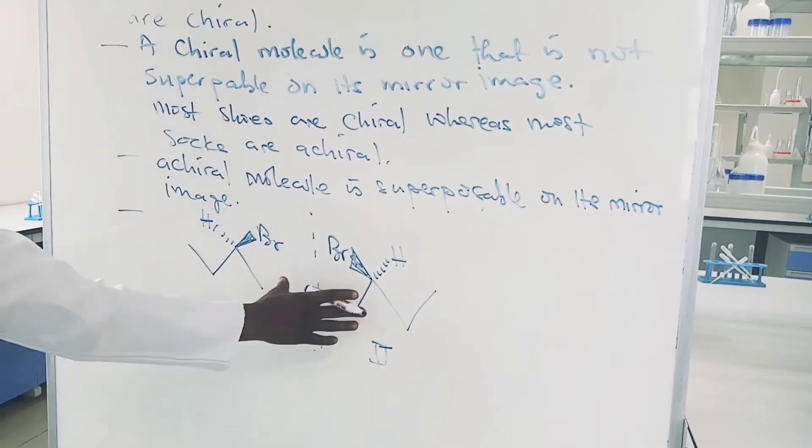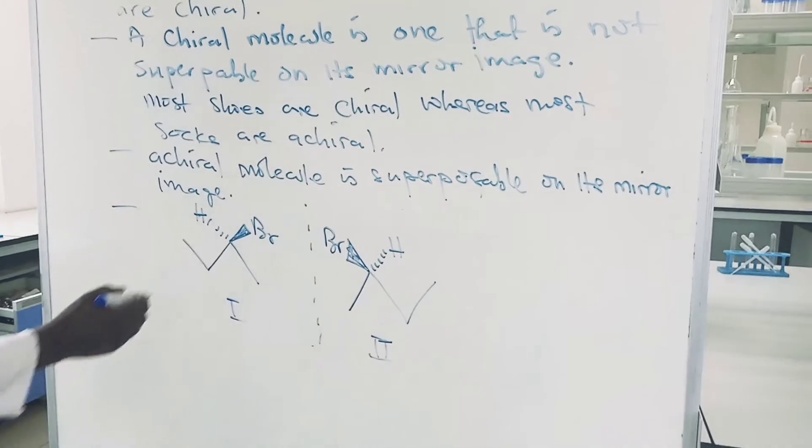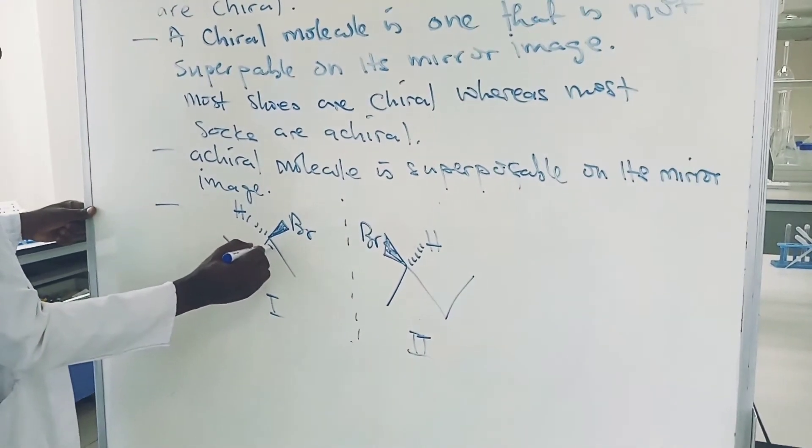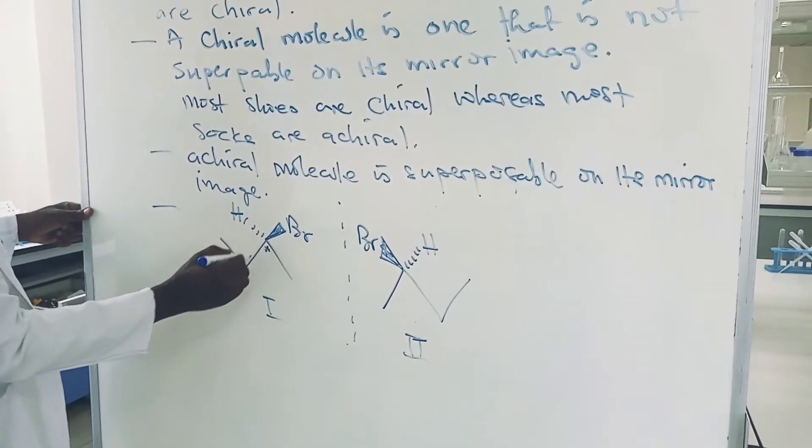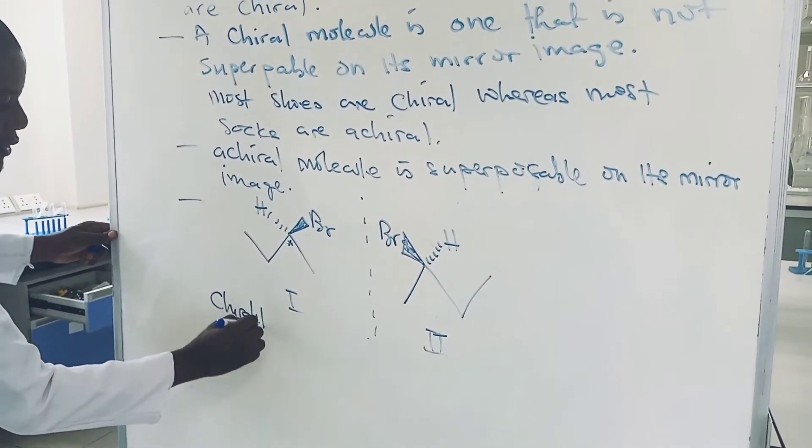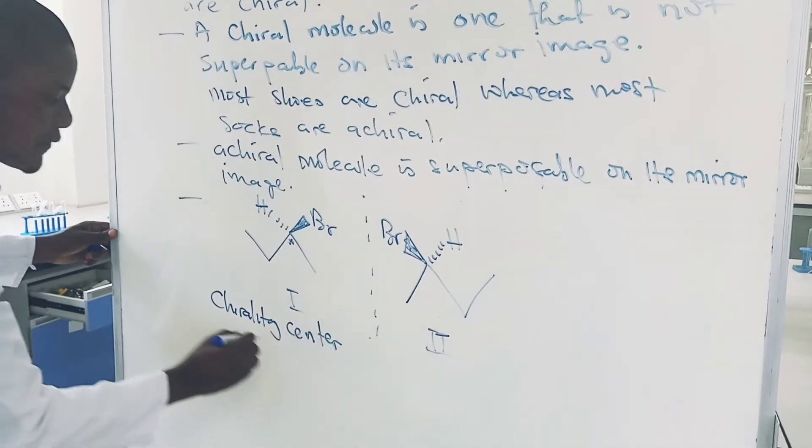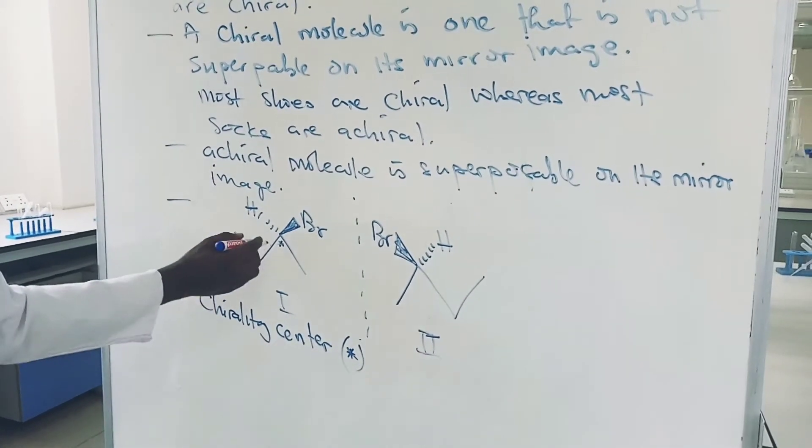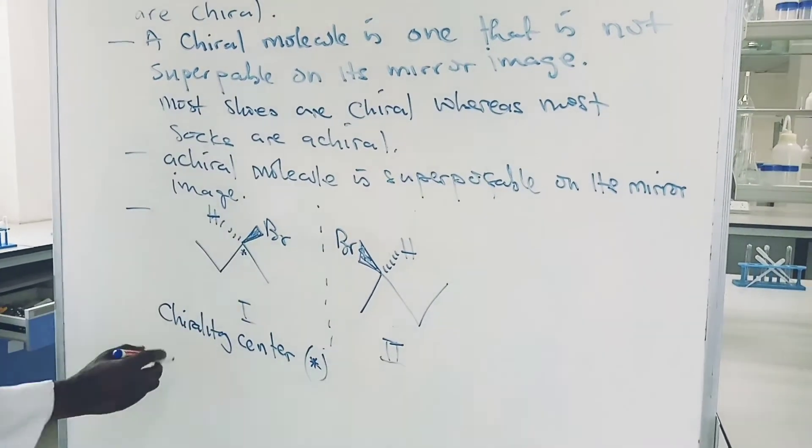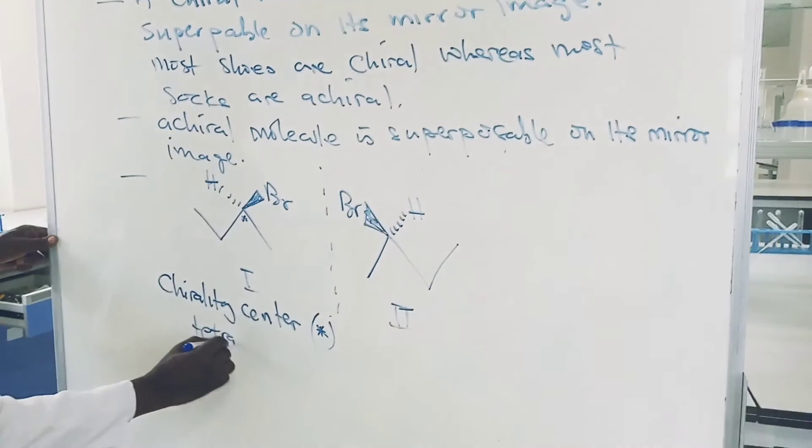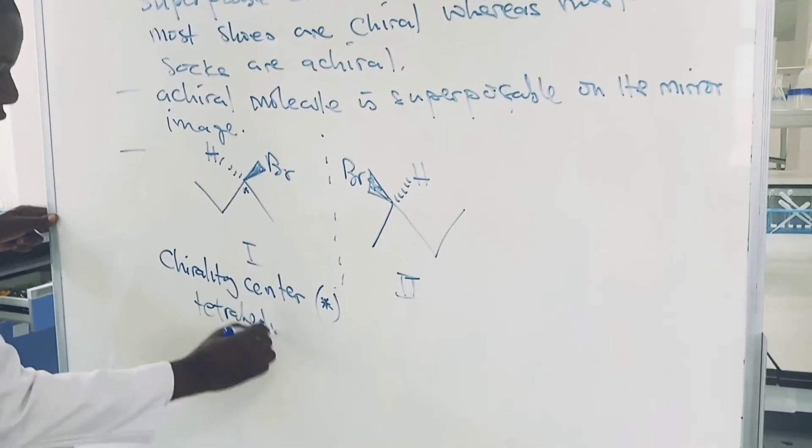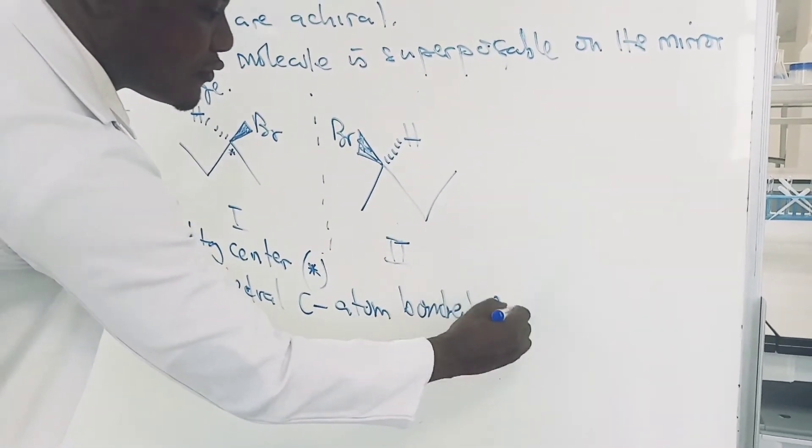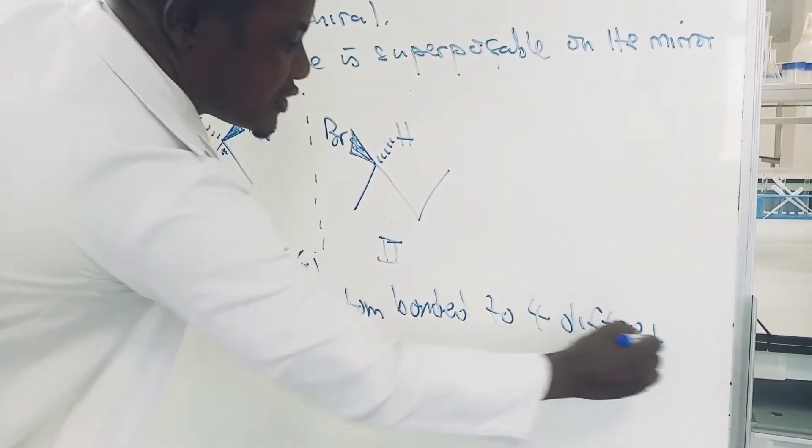So this is a pair of enantiomers. When we analyze here, there's this carbon atom. The carbon atom 2 is called the chiral center, which is designated by an asterisk. For a chiral center, this is a tetrahedral carbon atom bonded to 4 different groups.